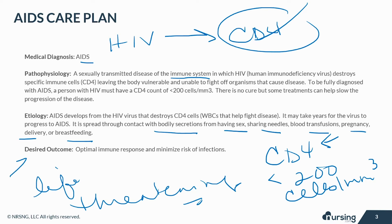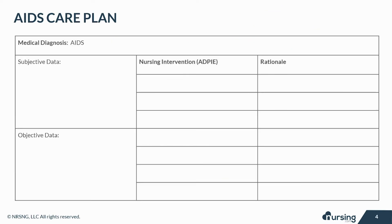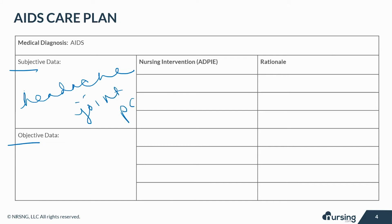The desired outcome is optimal immune response in the patient and to minimize the risk of infections. Let's take a look at some of the subjective and objective data that your patient with AIDS may present with. Subjective data are things based on your patient's opinions or feelings. For AIDS, they might complain of a headache, muscle aches, joint pain, sore throat, and fatigue.